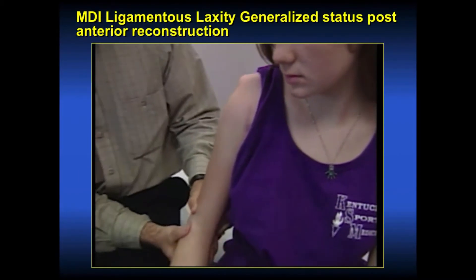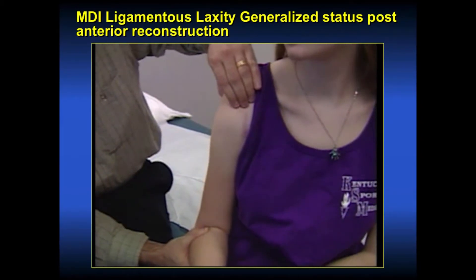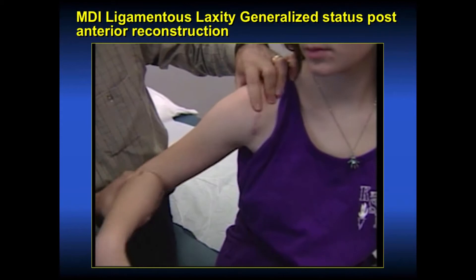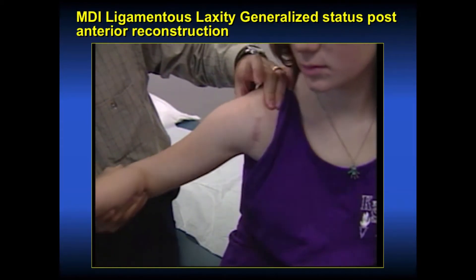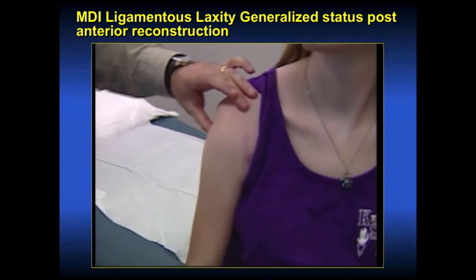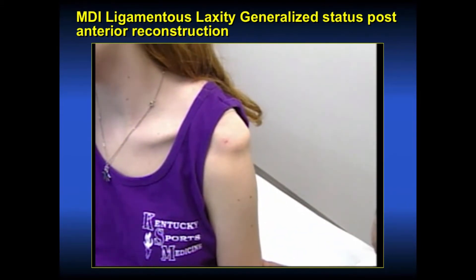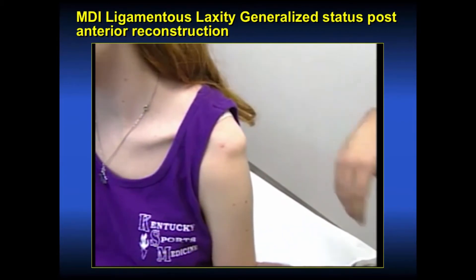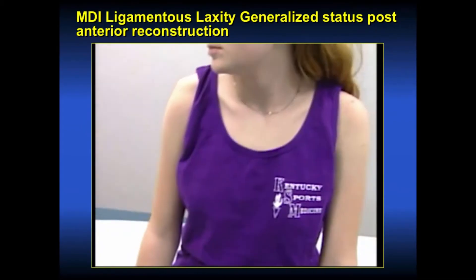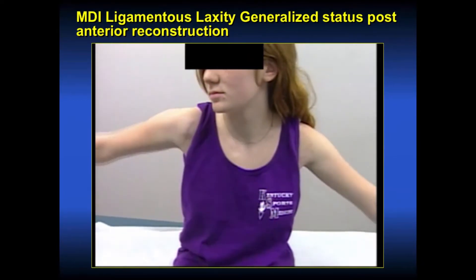This individual came to me after having an anterior reconstruction from a dislocation that occurred when she raised her arm in volleyball during PE. This is her exam of the operative side. She has multidirectional laxity with an Ehlers-Danlos type appearance. When we pull down on her humeral head, she is inferiorly dislocated. This is her non-operated side, and actually her operated side bothers her more. She has a definite significant sulcus sign and her humeral heads are inferiorly subluxed.